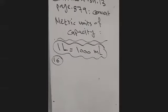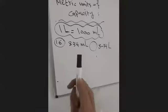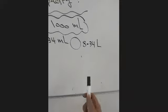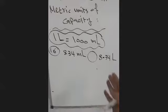We are on page 879, question 16. It's a comparing idea. The comparison is 834 milliliters compared with 8.34 liters. We need to know which one is bigger: 834 milliliters or 8.34 liters. In this type of question, we always turn the bigger unit to the smaller one. Since liter is bigger, we turn the liter to milliliter — it's easy because we multiply directly.